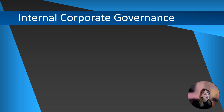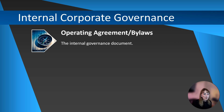Your internal governance is very important. These documents establish processes, powers, and procedures the company will follow when certain events arise, such as transferring ownership, a management disagreement, or establishing the authority of management. For LLCs, the internal governance is memorialized in the operating agreement of the company. This document is internal and not filed publicly.